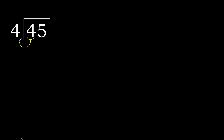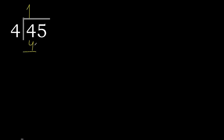45 divided by 4. 4 is not less, therefore work with 4. 4 multiplied by which number is nearest to 4 but not greater? 4 multiplied by 2 is 8 — 8 is greater. 4 multiplied by 1 is 4, it is not greater. 4 minus 4 is 0.